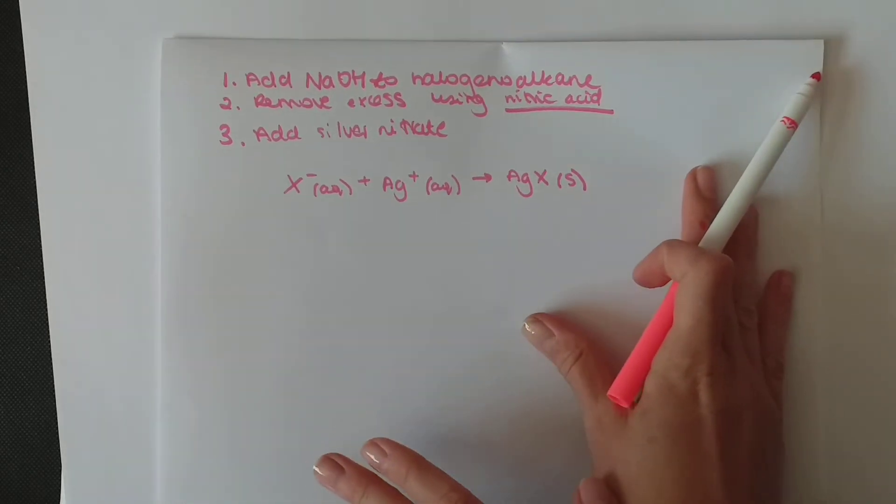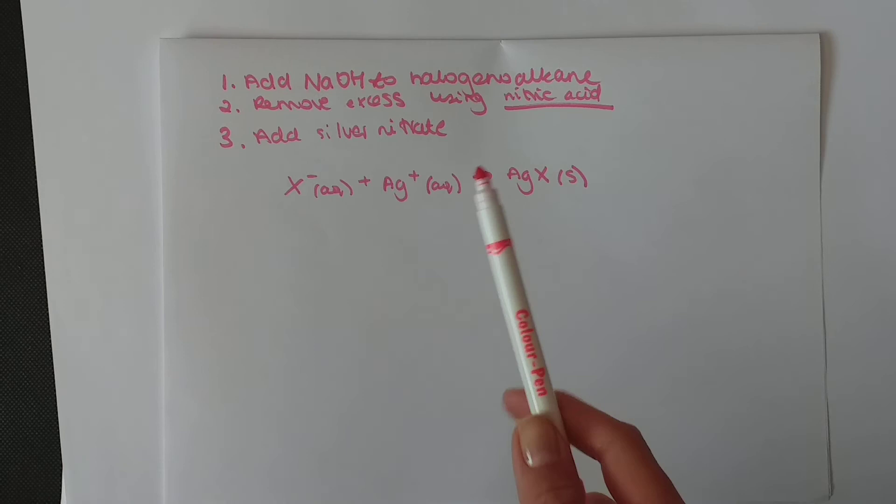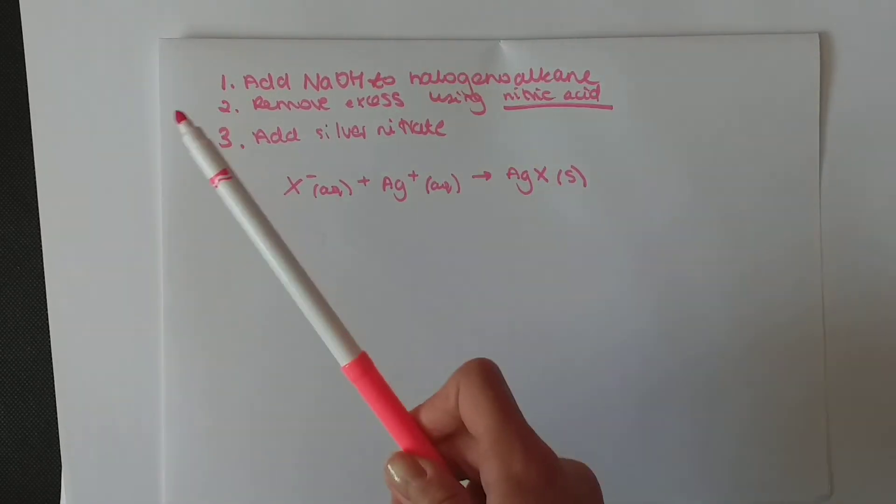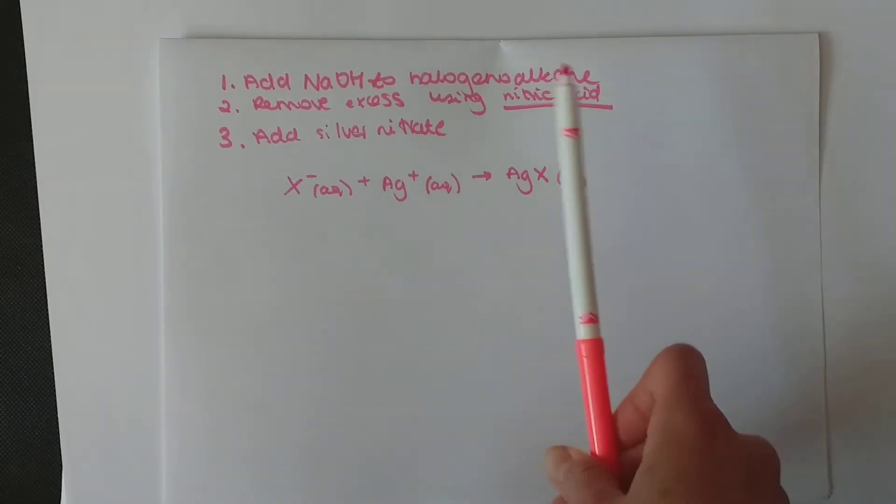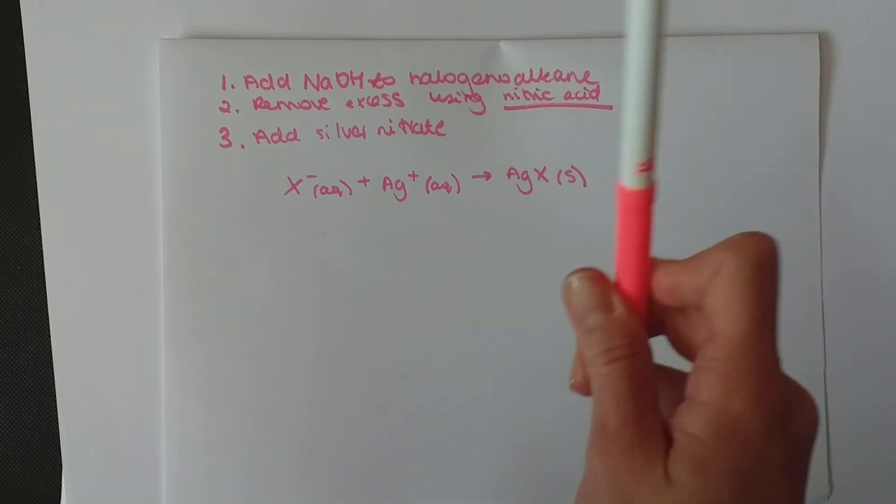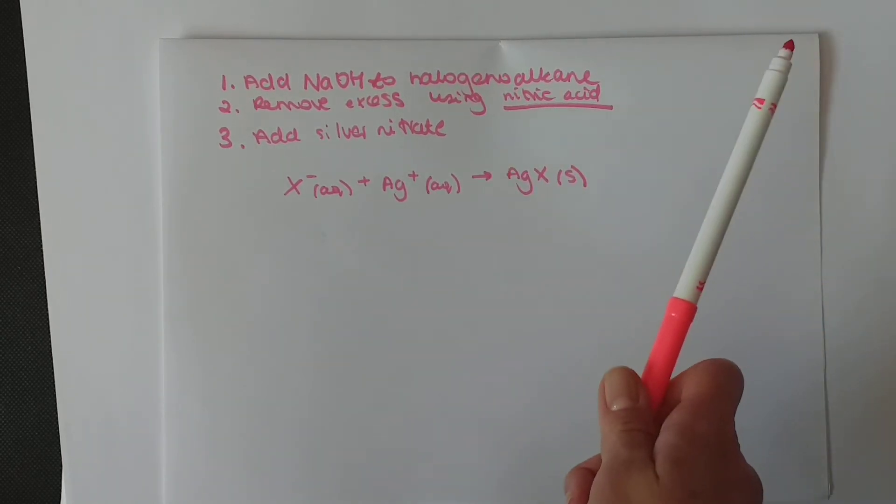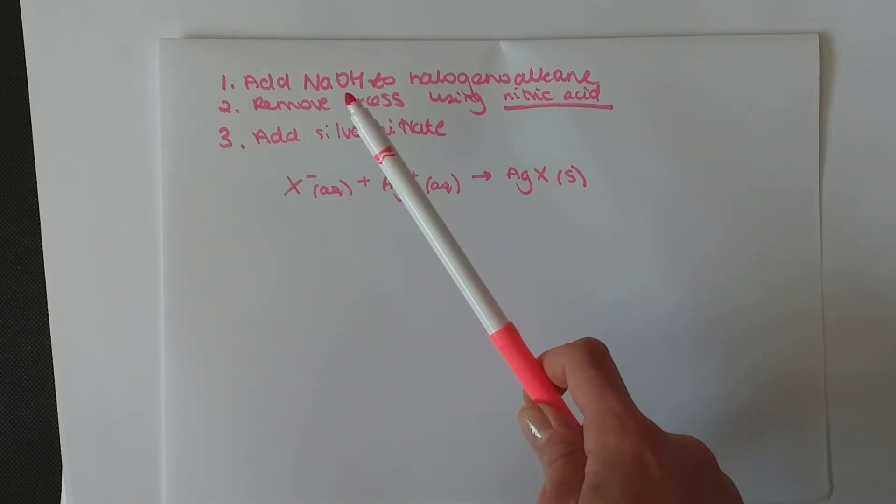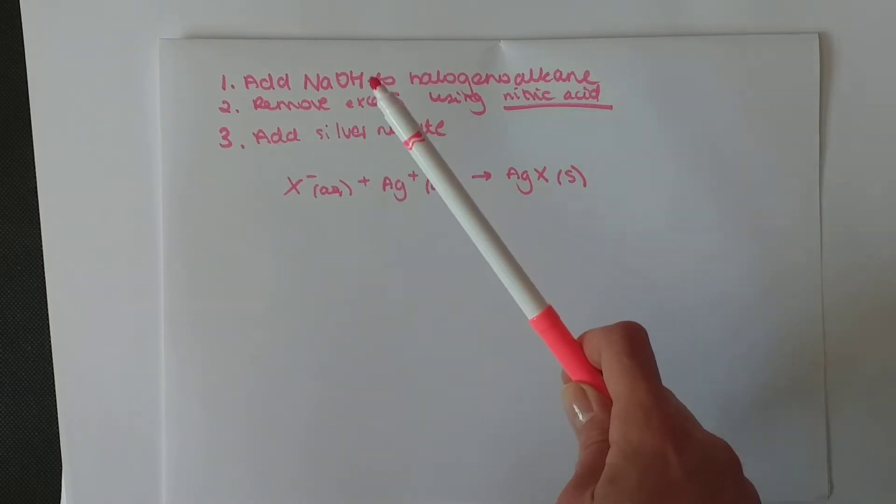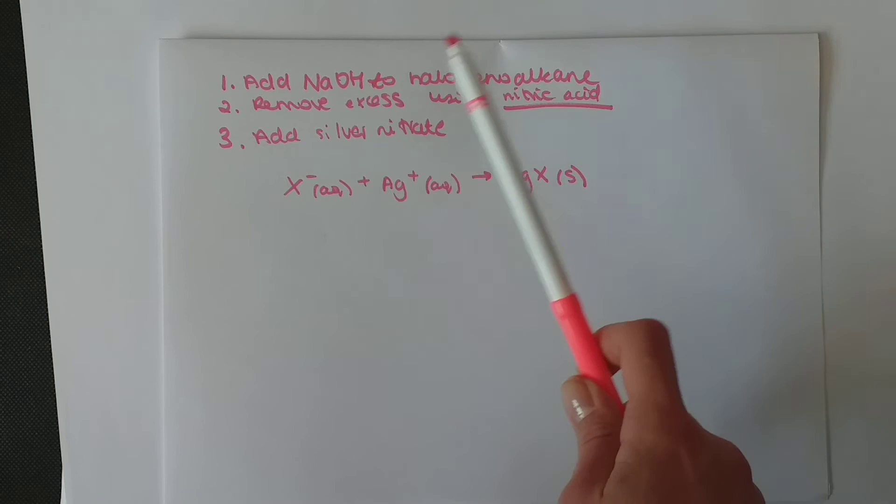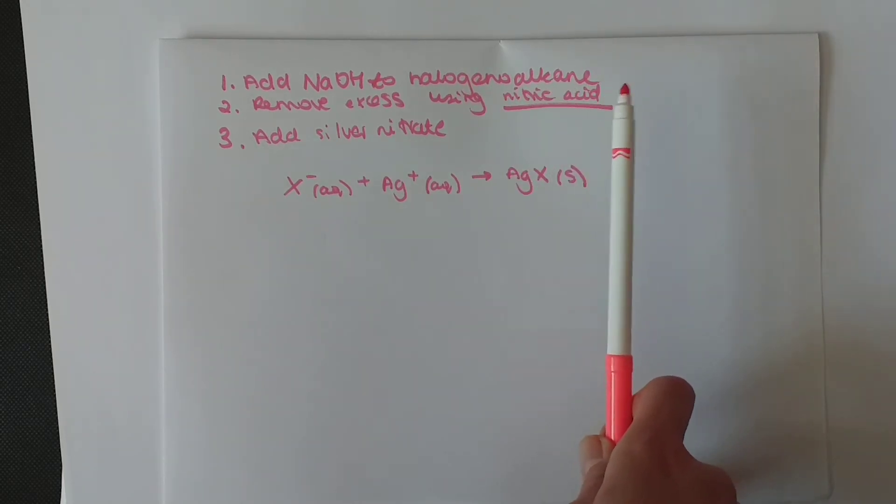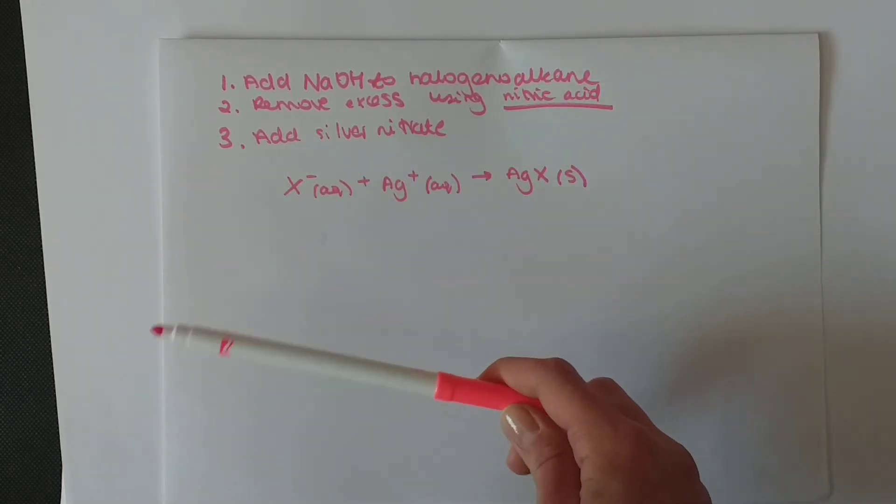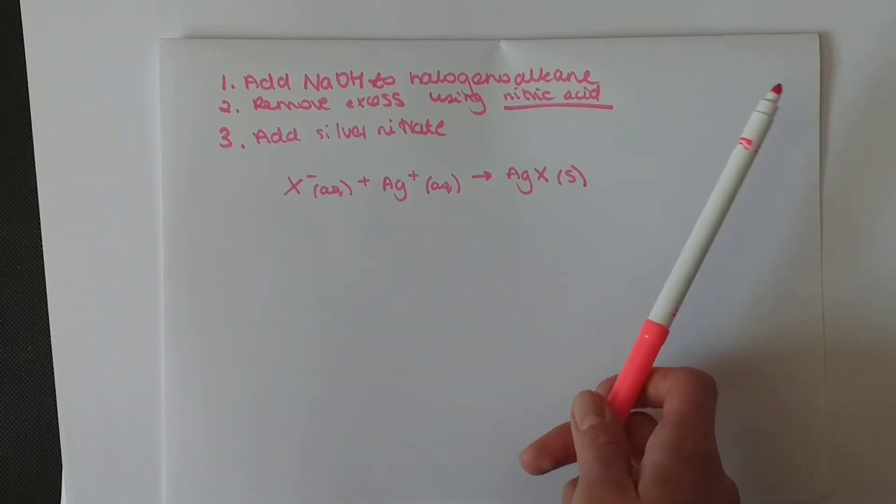Let's go through it again. First, you add sodium hydroxide to the halogen alkane. You form an alcohol and you form that halogen with a minus. After you add sodium hydroxide, you remove the excess by adding nitric acid. After you did this, you add the silver nitrate.